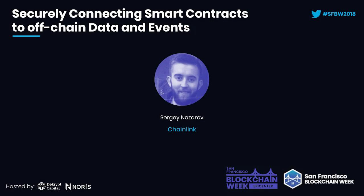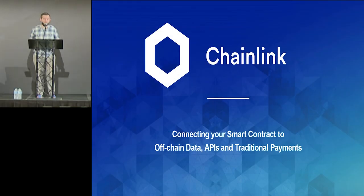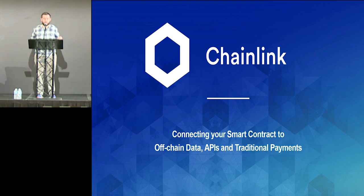Hi everyone, thanks for coming. The topic we're going to be covering is how we take smart contracts and make them useful for real-world events. The approach we have is that for a smart contract to be a form of digital agreement useful for real-world events, it needs to know about those events — market price changes, IoT data for insurance, GPS location for trade finance — and it needs to reliably receive these inputs.